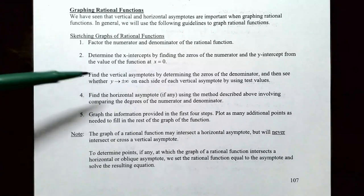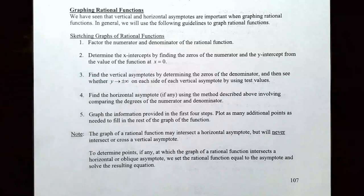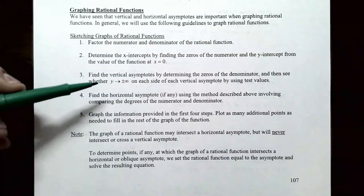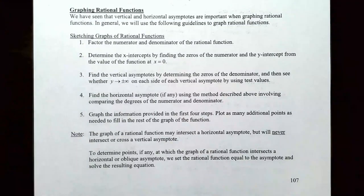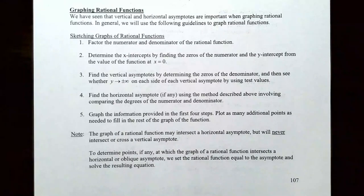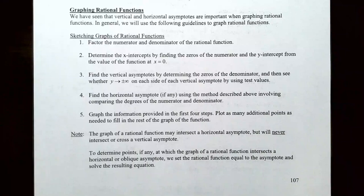Step three: find any vertical asymptotes by determining the zeros of the denominator, then determine whether the graph will increase without bound or decrease without bound on each side of the vertical asymptote using test values. Step four: find any horizontal asymptotes by comparing the degrees of the numerator and denominator. Step five: graph the information from the first four steps, plotting additional points as needed.